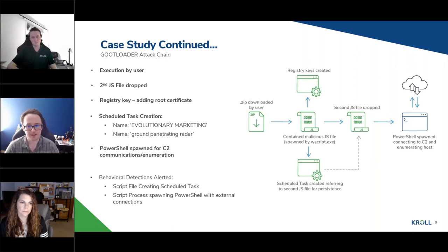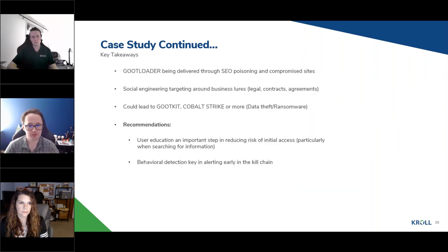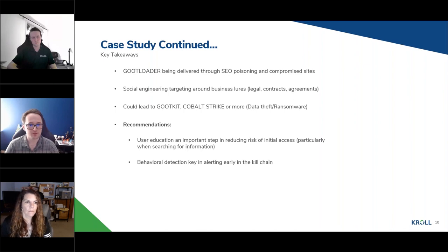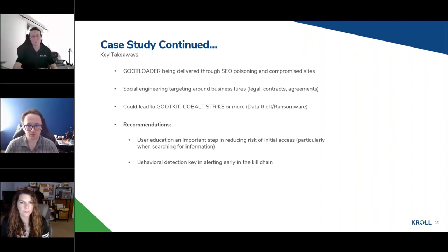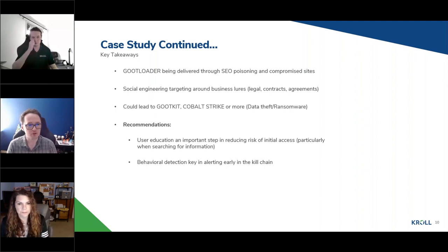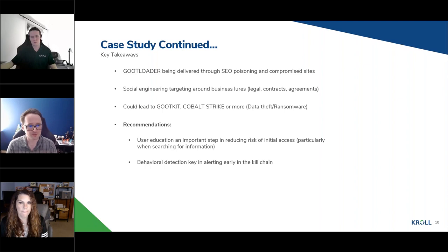These caused analysts to quickly respond and contain the incidents. However, outside of this case study, GOOTloader has additionally been seen leading to installations of further Cobalt Strike payloads as well as GOOTkit, which is a sophisticated banking Trojan. GOOTloader has been delivered widely through SEO poisoning and compromised sites, with social engineering targeting centered around business-related lures — really users seeking out work-related information and falling victim, potentially leading to GOOTkit, Cobalt Strike, data theft, and ransomware.